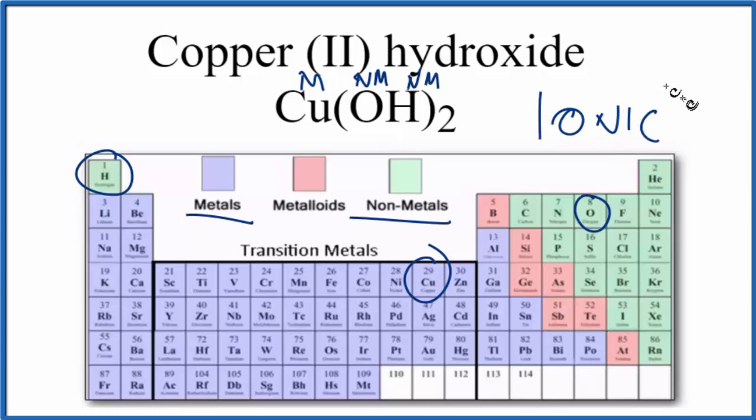And because it's ionic, we really should look at the charges on the copper ion and then this OH, this hydroxide ion here. So we know copper is a transition metal, so we can't tell just by looking at copper here what its charge will be. But we know the hydroxide, the whole hydroxide, each one of them is going to have a negative charge.